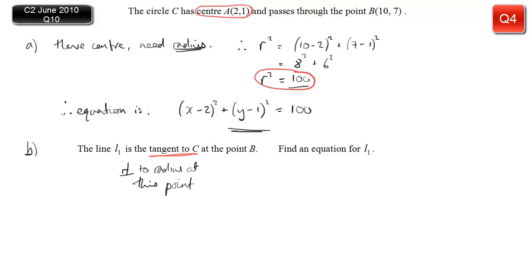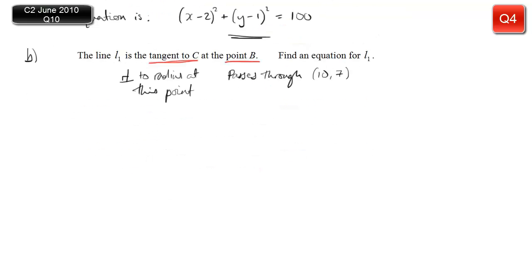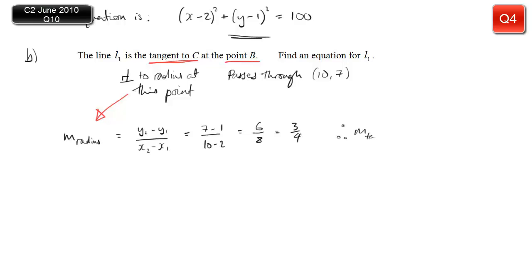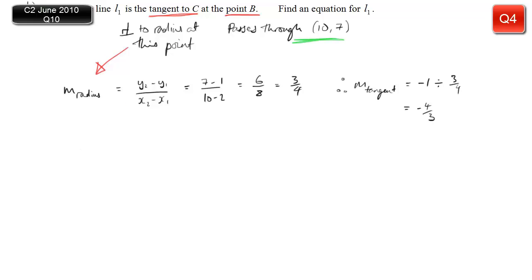Part b: we have a tangent to this circle at a particular point. The tangent is perpendicular to the radius at that point. To find the gradient of the radius we use the standard formula: (y2 minus y1) over (x2 minus x1) — subtract the y values on top and x values on the bottom. We get a gradient of three quarters for the radius, which means the gradient of the tangent is the negative reciprocal: minus four thirds.